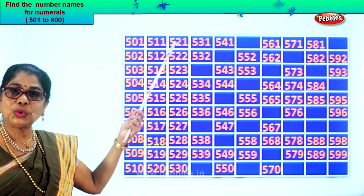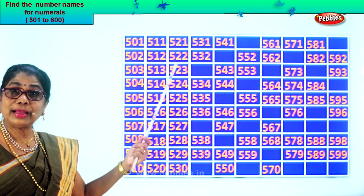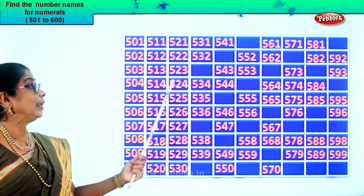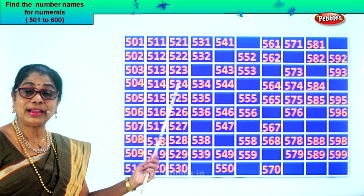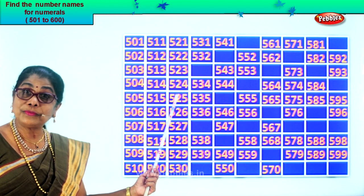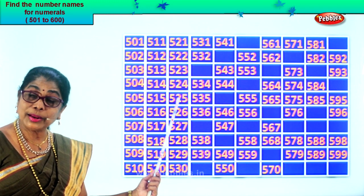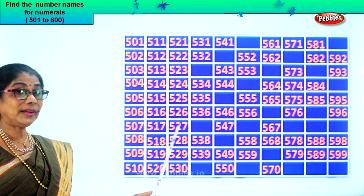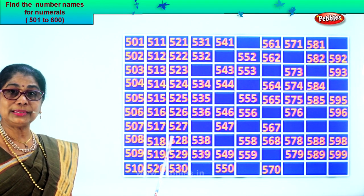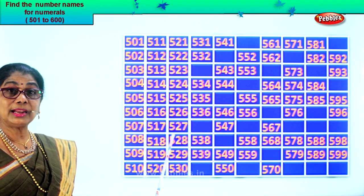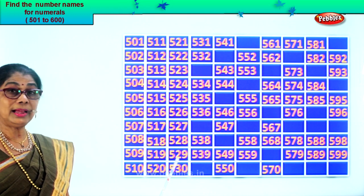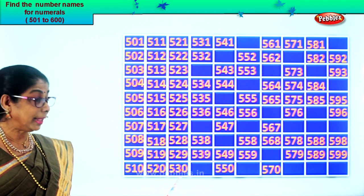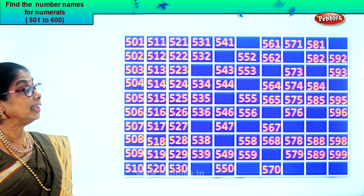Let's say together: five hundred and twenty-one, five hundred and twenty-two, five hundred and twenty-three, five hundred and twenty-five, five hundred and twenty-seven, five hundred and twenty-eight, five hundred and twenty-nine, five hundred and thirty. Good.